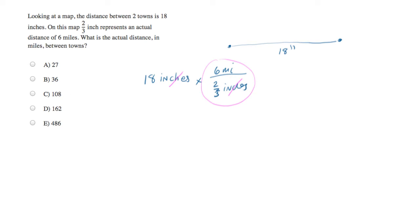And what we'll be left with is the correct answer. So, 18 times 6 divided by 2/3 is a number of miles, and that is the answer.